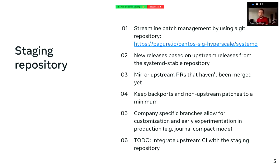Each of the company-specific branches also comes with its own build of the RPM, which can then be deployed. If everything goes well, the patch is merged upstream after validation, becomes available in a public release, and eventually flows back into the main Hyperscale branch for everyone. One thing we're still missing in the Pager repository, but want to add in the future, is integrating the upstream systemd CI so that we can run all the integration tests from upstream on any pull requests or commits to the staging repository as well. This would help make sure that even custom patches or backports don't break any upstream tests.